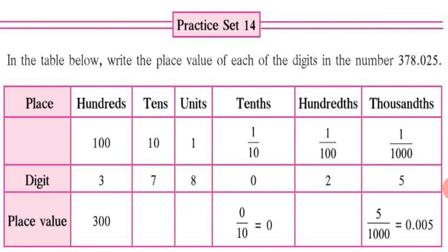So, here we made use of decimal numbers and we added them and wrote our final answer. Similar things we are going to do in our practice set number 14. In the table below, write the place value of each of the digits in the number 378.025.